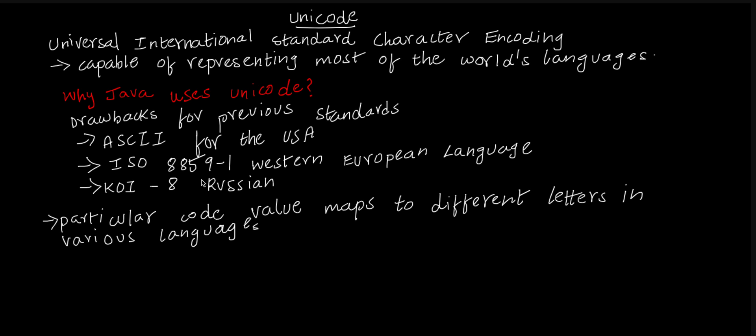Can you find the problem that they faced during that time? Please try to pause this video and think about it. For example, if ASCII has code 100, the same 100 can be present in ISO 8859-1, and the same code can be present in KOI-8.